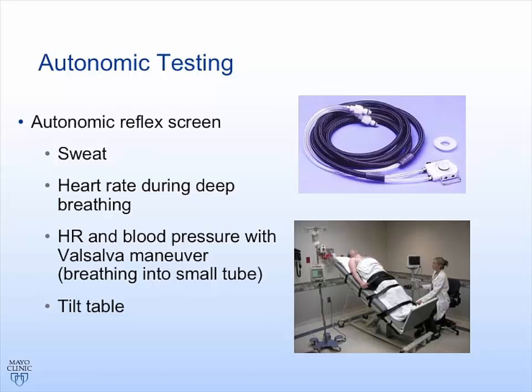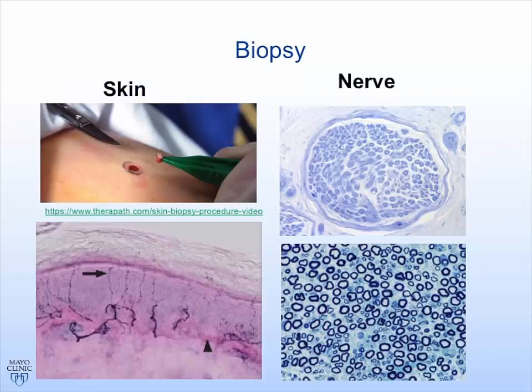Sometimes in painful burning feet — what we call small fiber neuropathies — patients might get a skin biopsy, like a little punch biopsy. We look at nerve fibers as they cross the skin layers and count them, which tells us if there's loss of nerve fibers, though it doesn't tell us as much about why. Sometimes we can do a whole nerve biopsy where we look at the nerve under the microscope and examine it in more detail for certain causes, but we only use that in more rare situations.